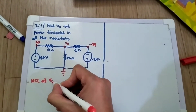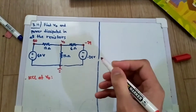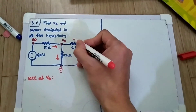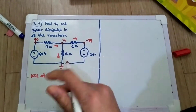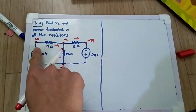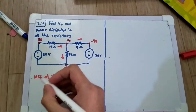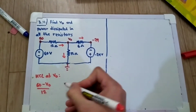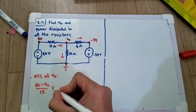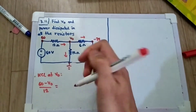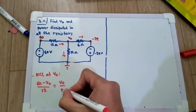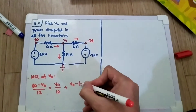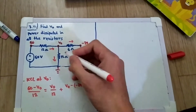Setting the sum equal to zero, I will assume the current directions: one going here, one going here, and one going there. The current going in equals the current going out. The only current going in is 60 minus V0 divided by 12. The two currents going out are: V0 divided by 12, and V0 minus (minus 24) divided by 6.